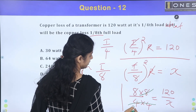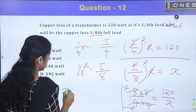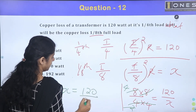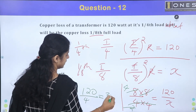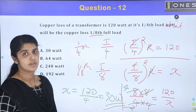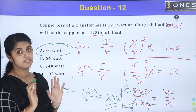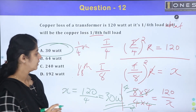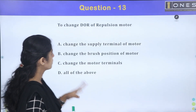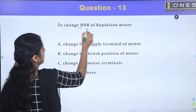Solving: x equals 120 divided by 4, which equals 30 watts. The first option is correct — 30 watts.